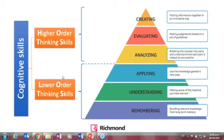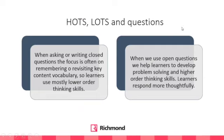LOTS — lower-order thinking skills — covers remembering, understanding, and applying. HOTS — higher-order thinking skills — covers analyzing, evaluating, and creating. This is Bloom's Taxonomy. The recording of the session will be available on Monday on YouTube — search for 'Richmond Webinars' and this session will be there.